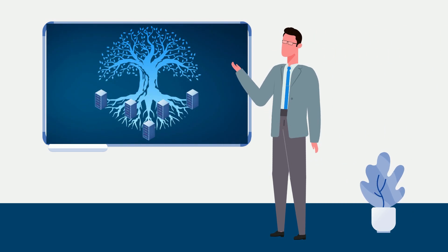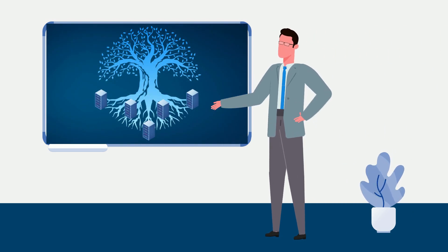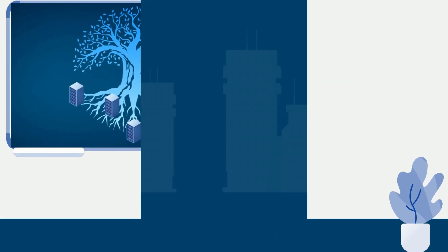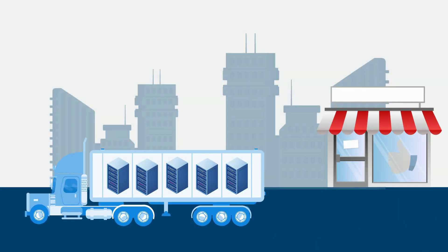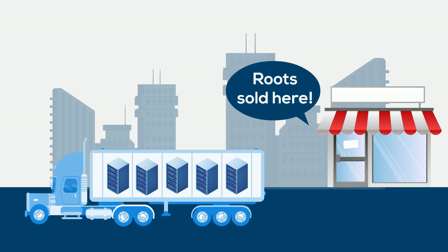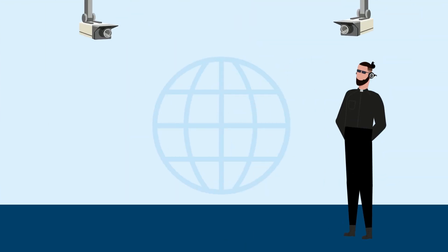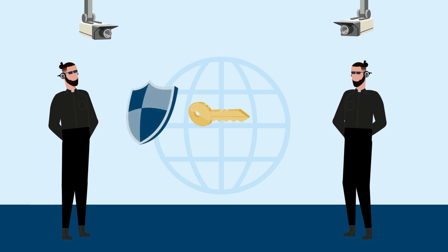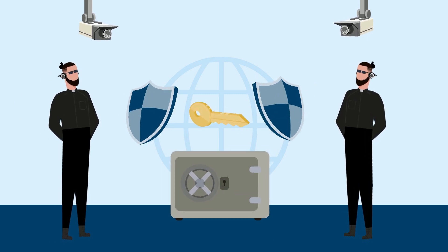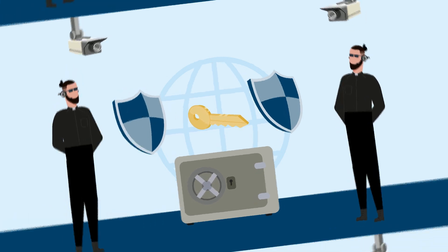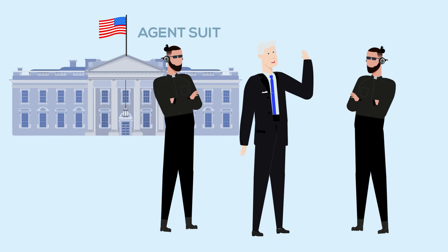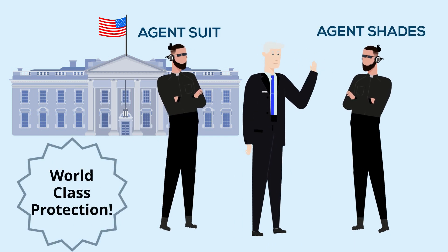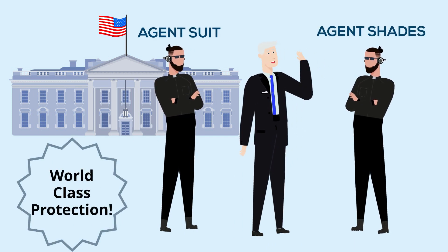A root CA, as the name implies, is the root of trust for your PKI. In order to trust a certificate chain, the root certificate needs to be added to the trusted root store of the operating system. Since the root CA is the root of trust for your entire certificate chain, it is vital that it is your organization's most protected asset. You need to treat the root CA like it's the president and you are the secret service. If some bad actor gains access to it, they have the keys to your whole kingdom.